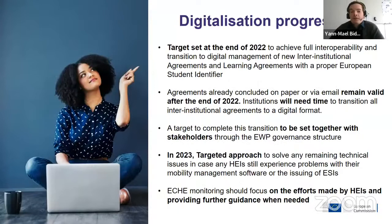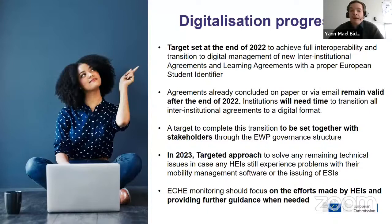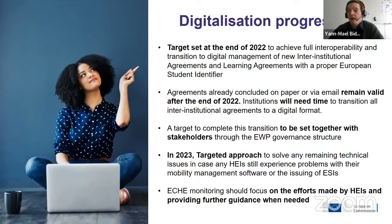About the digitalization progress: you have all heard that we have set this target for the end of the year to achieve full interoperability and transition to digital management of new inter-institutional agreements and learning agreements. This target date remains our target. This is why we have created this interoperability action plan — to make sure that by the end of the year we can achieve a system that enables full interoperability and that you as users will be able to use it with all your partners from next year.